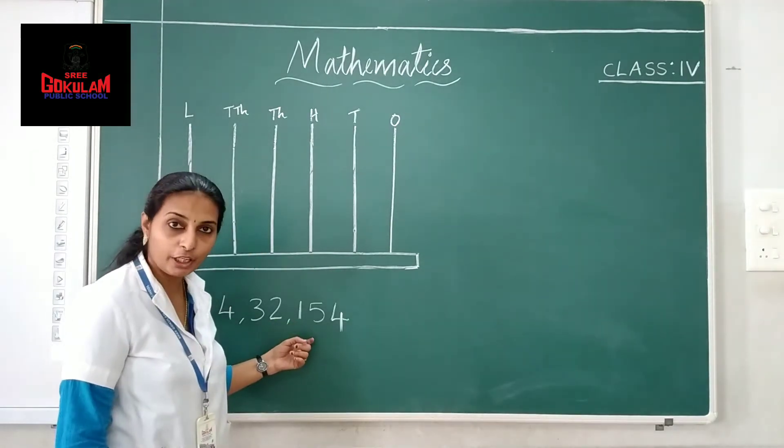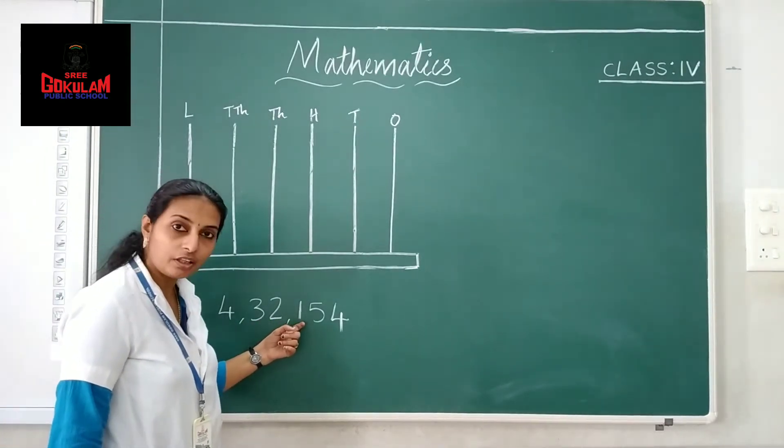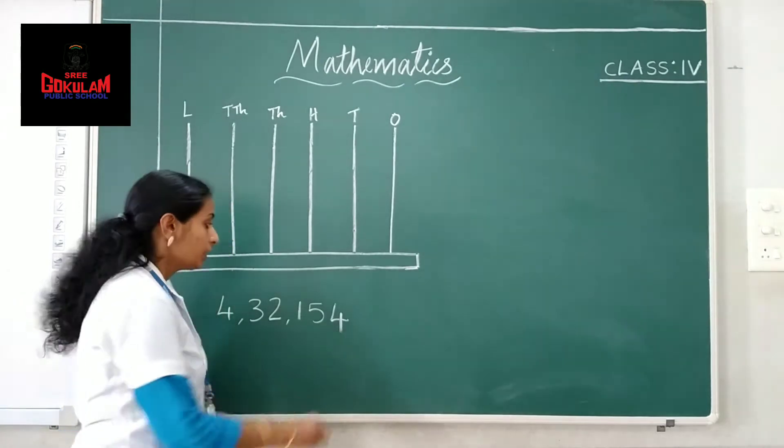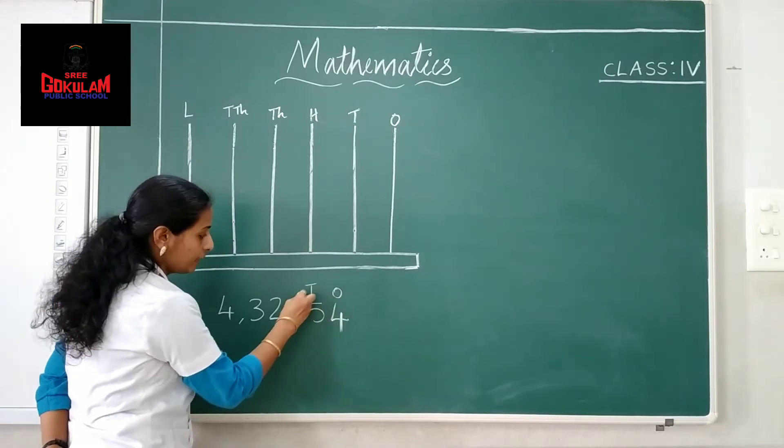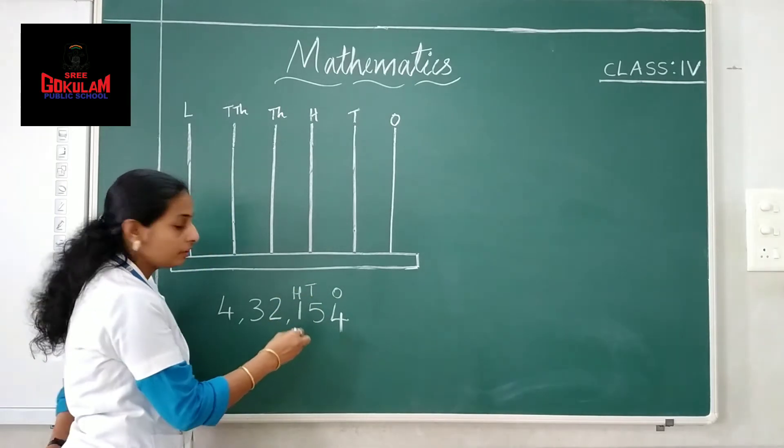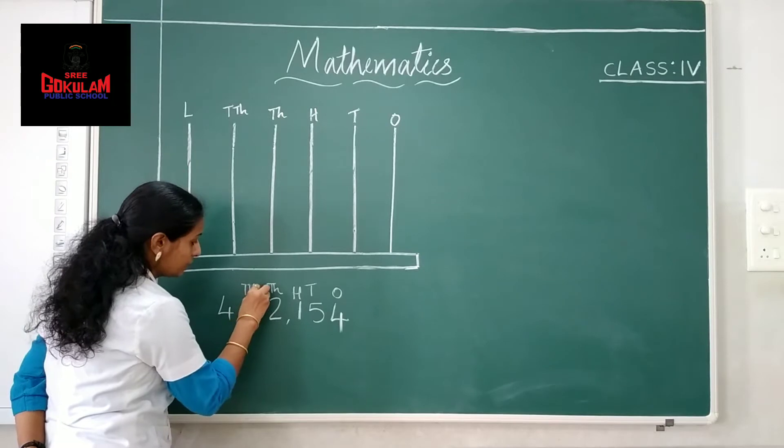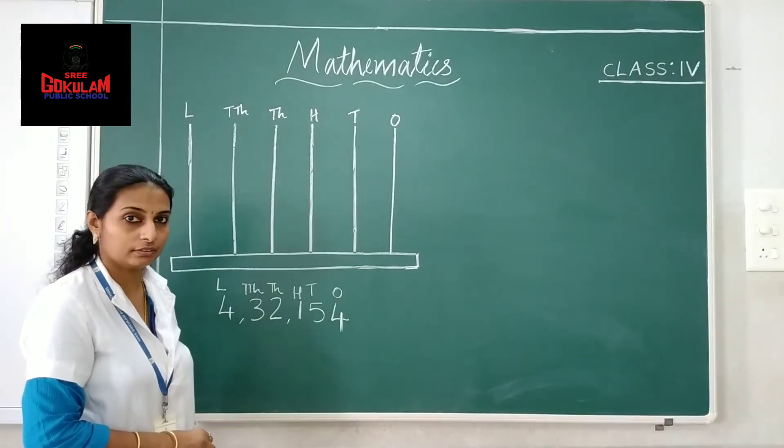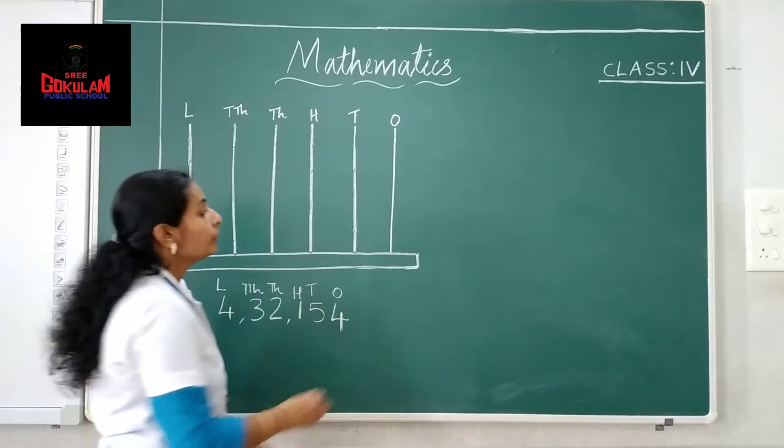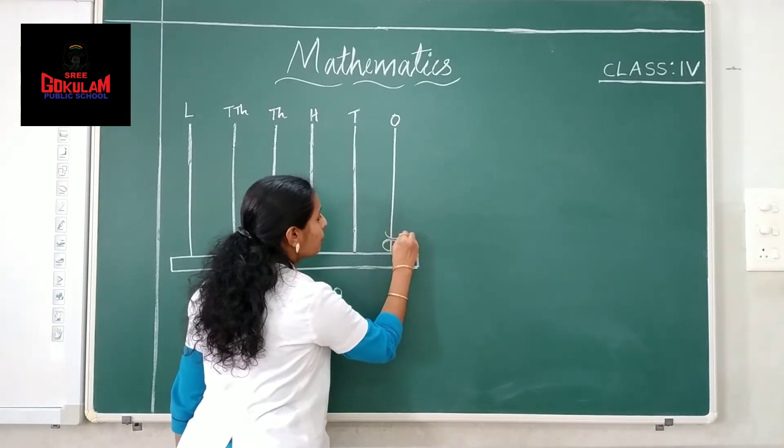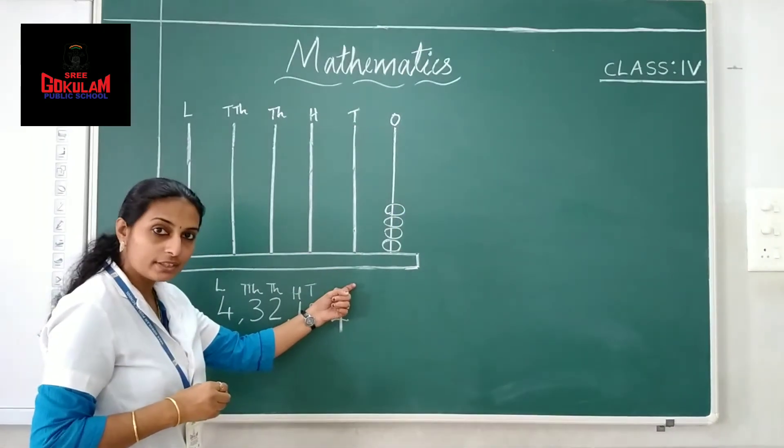Here we have a number: 4 lakh 32,154. Here ones, 4 ones. 5 tens. 1 hundred. 2 thousand. 3 ten thousand. And 4 lakh. First, we have to check. 4 ones. So we should draw 4 beans in this pipe. 4 ones are here. So we need to draw 4 beans.